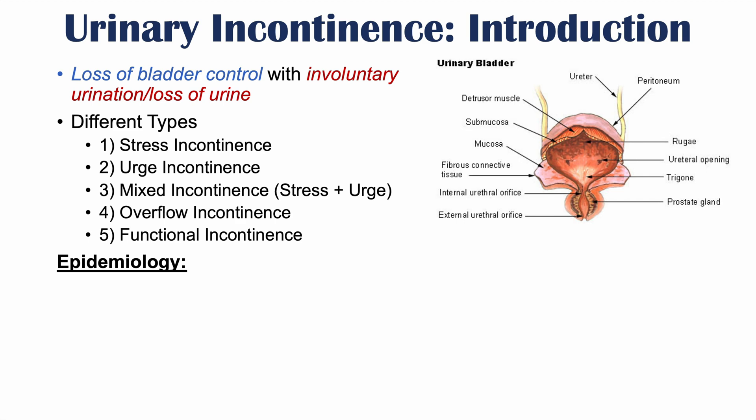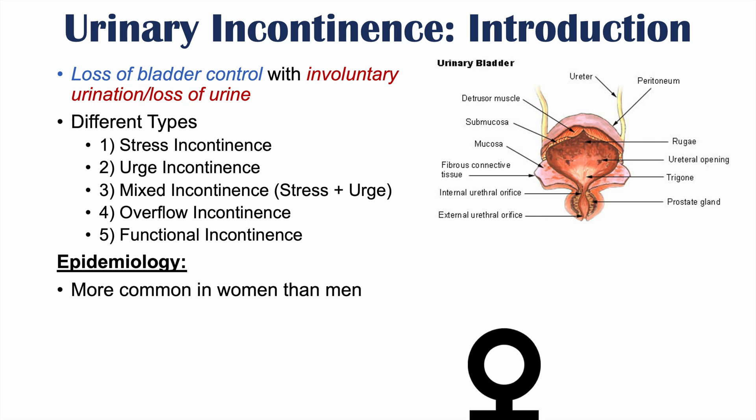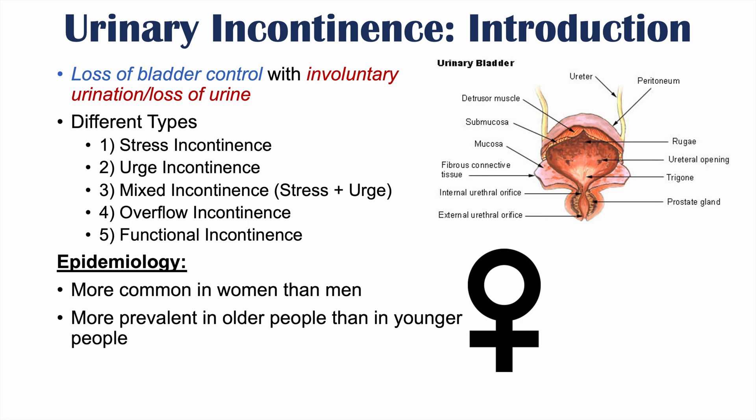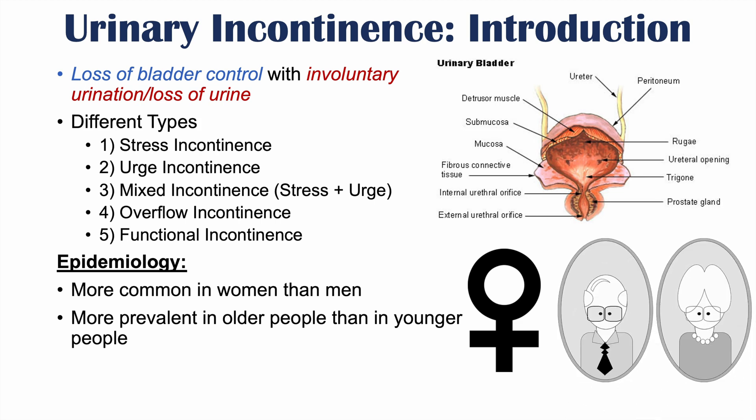What is the epidemiology of urinary incontinence? In general, more women are affected by urinary incontinence than men. Certain types are more common in women and some types are more common in men, but overall urinary incontinence is more common in women. Urinary incontinence is also more prevalent in older people than in younger people.